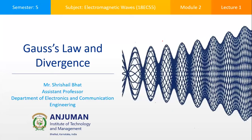We have completed the first module, which covered vector analysis and Coulomb's Law, giving the expression for force between two point charges. We also covered electric field intensity, electric flux density, and different charge distributions — point charge, line charge, surface charge, and volume charge — along with numerical examples and electric flux. Today we begin the second module, which has two topics: Gauss's Law and Divergence, and Energy and Potential.